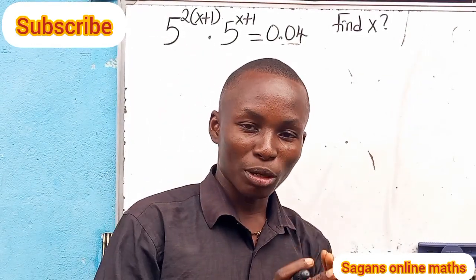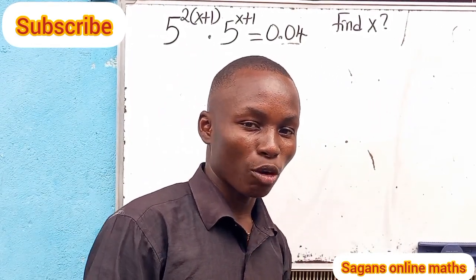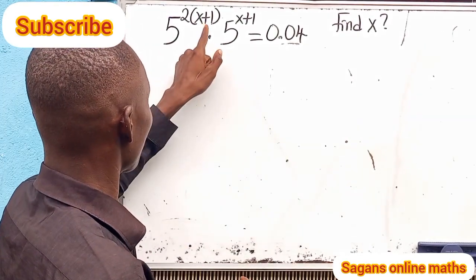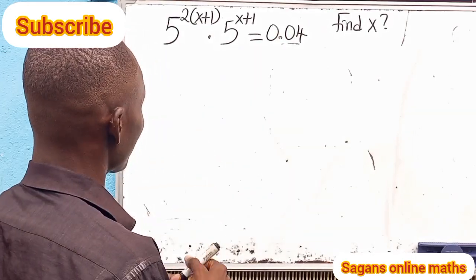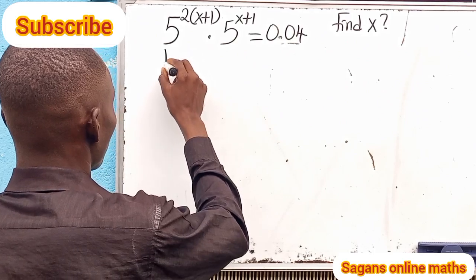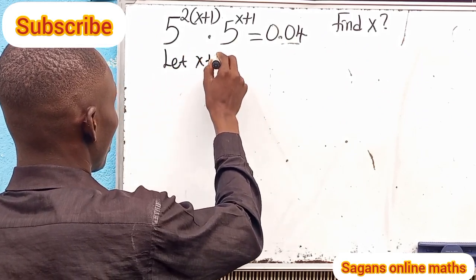Now this will be very simple. Let's observe our powers here. You can see that our powers here have the same base. We have -2(x+1). You can see that x+1 is common, so let's let x+1 equal p.